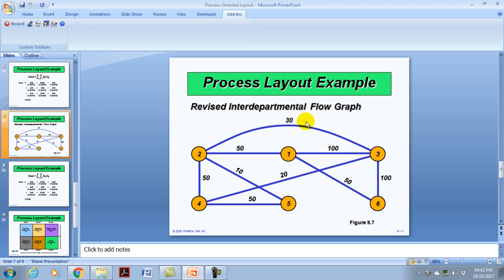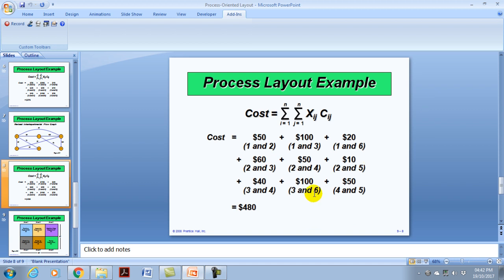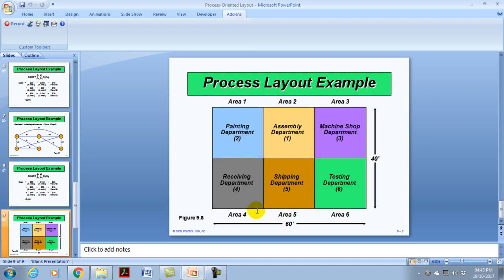And we do the same thing now with this new schematic here being developed as a recommendation to the organization. We can calculate the cost accordingly. So we can see here that between one and three, because they are close by, we don't have $200 anymore. We kept the $100, which is 100 loads at $1 per load. So you have a new cost of $480, which was a reduction.